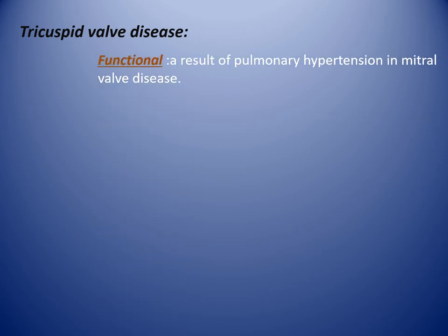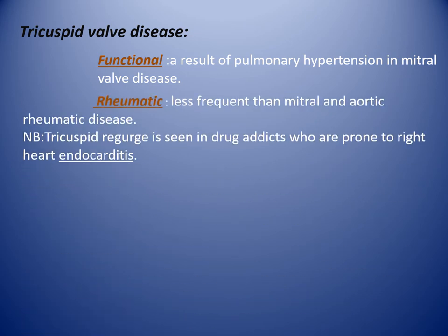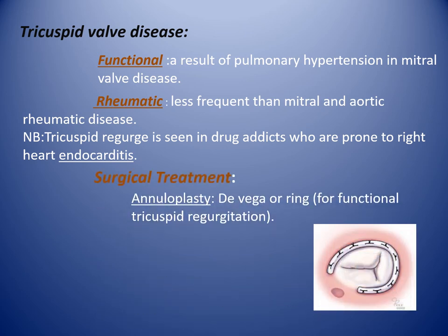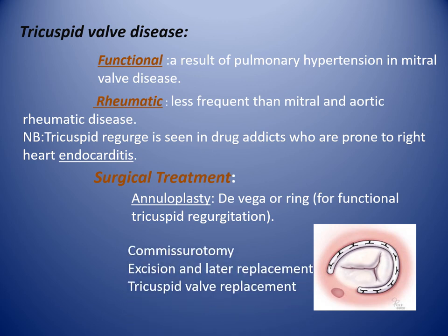Tricuspid valve disease: functional, as a result of pulmonary hypertension in mitral valve disease. Rheumatic — less frequent than mitral and aortic rheumatic disease. Tricuspid regurgitation is also seen in drug addicts who are prone to right-sided infective endocarditis. Surgical treatment: annuloplasty — De Vega or ring annuloplasty — for functional tricuspid regurgitation. Commissurotomy, excision, and later replacement — tricuspid valve replacement — for rheumatic disease.